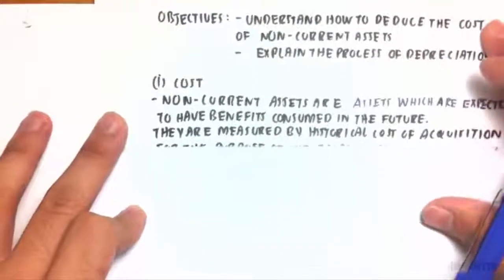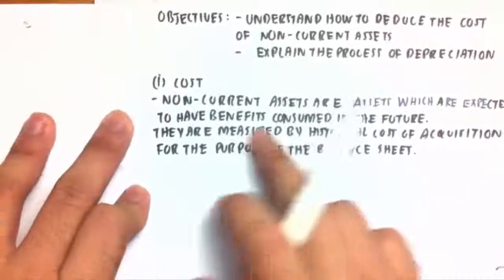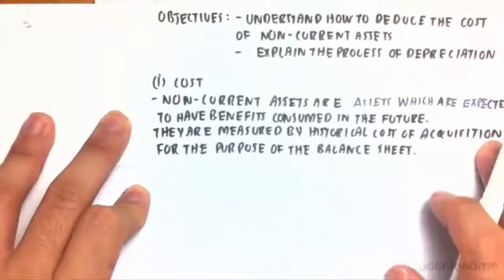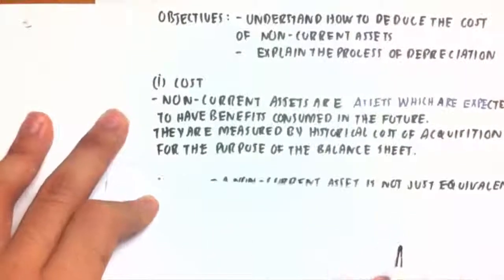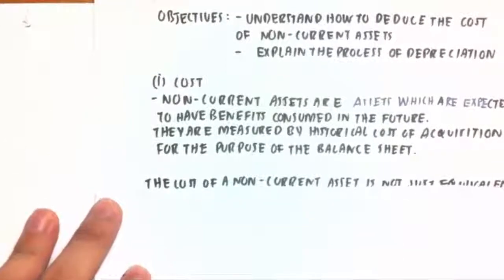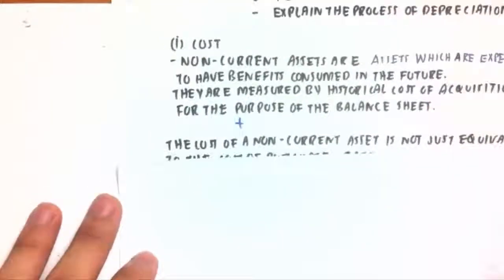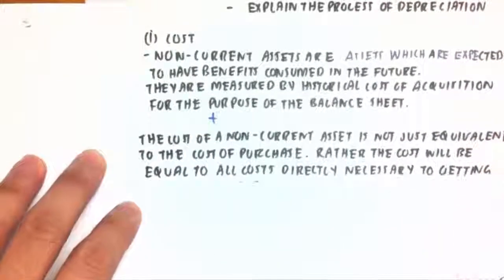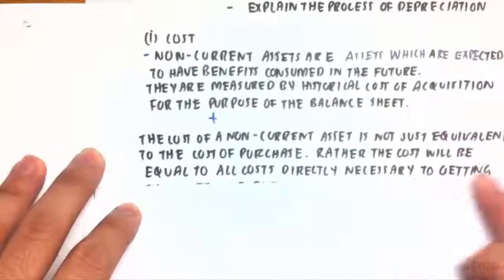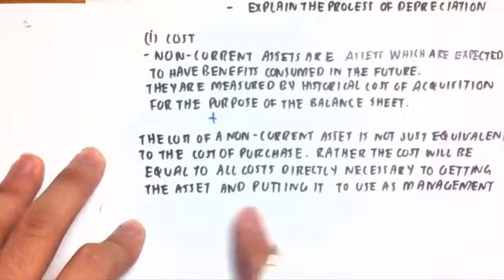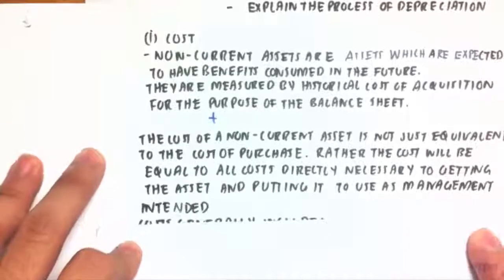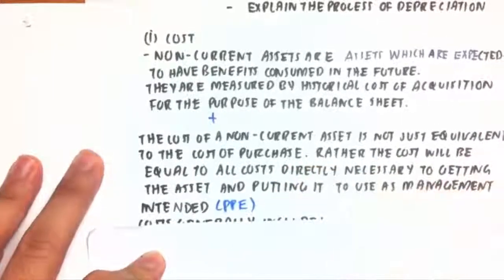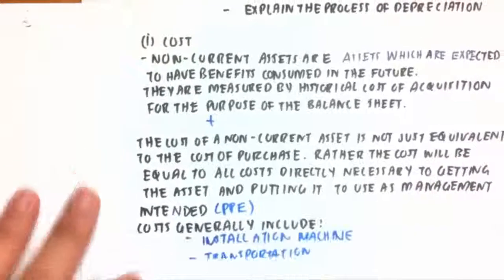Non-current assets are assets which are expected to have benefits consumed in the future. They are usually measured by the historical cost of acquisition for the purpose of the balance sheet. The cost of a non-current asset is not just equivalent to the cost of purchase. Rather, the cost will also be equal to all costs directly necessary to getting the asset and putting it into use as management intended. That usually applies to plant, property and equipment — PPE for short.